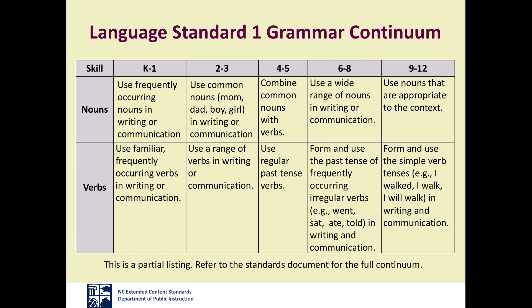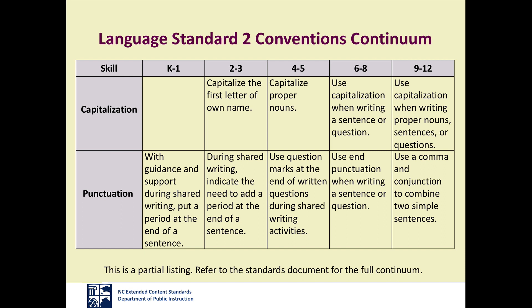Language Standard 1, across all grades, refers to grammar. This partial listing of the grammar continuum deals with nouns and verbs. Expectations for each grade band are described across each row, making it easy to see the increasing complexity. At the earliest grades, students are expected to use frequently occurring nouns and familiar verbs when writing or communicating. By high school, they should use the proper form of nouns and verbs in context. Language Standard 2, across all grades, refers to the conventions of writing, including a continuum for capitalization and punctuation that becomes more complex with each grade band.